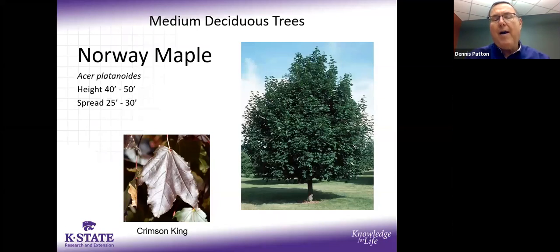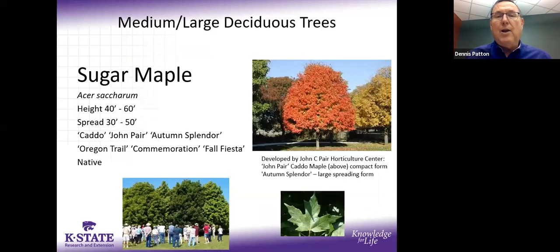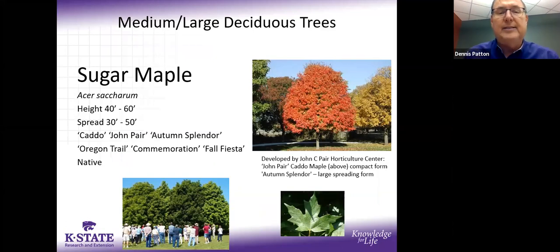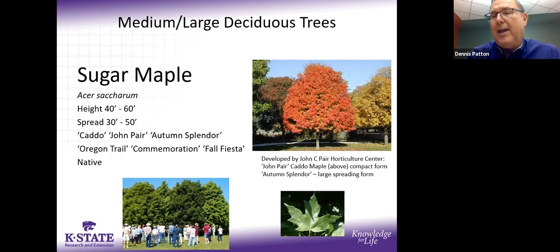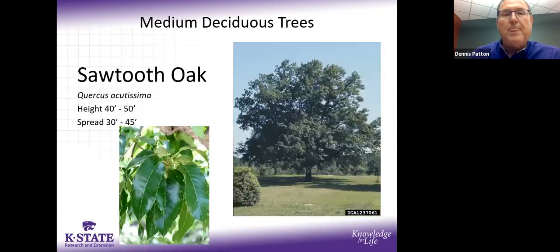Norway maple is still a good tree for our area, though it's on invasive lists on both the East and West Coast. 'Crimson King' gives purple foliage, and it's a very hard-wooded maple. Sugar maple is a great tree — there are newer introductions with thicker, glossier leaves that better withstand wind and heat. You'll likely get the best fall color from sugar maple: oranges, reds, and purples. Look at the Caddo maple varieties bred by K-State from Oklahoma seedlings; 'Oregon Trail' is from Hiawatha, Kansas — nice local roots.